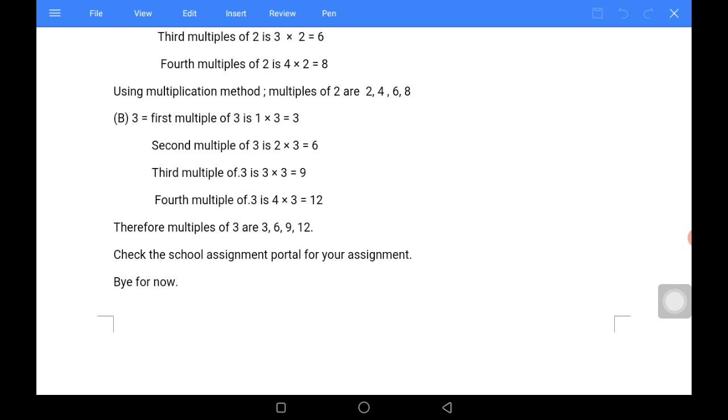Fourth multiples of three is four times three and that will give us twelve. That is, three in four places. Therefore, multiples of three are three, six, nine and twelve.